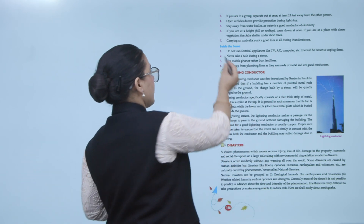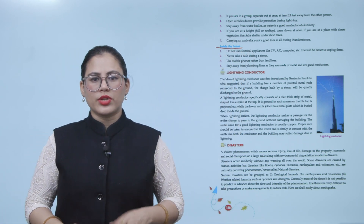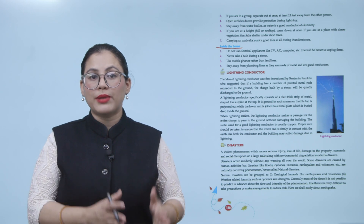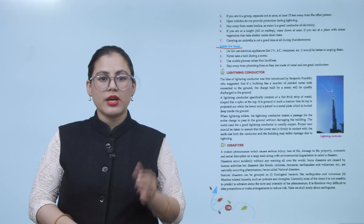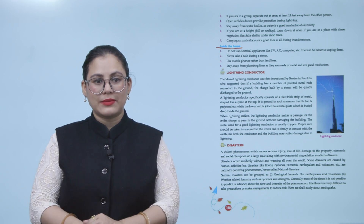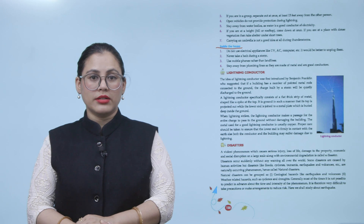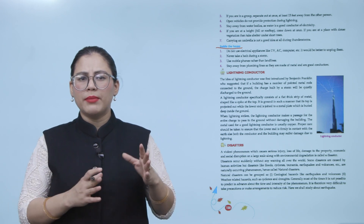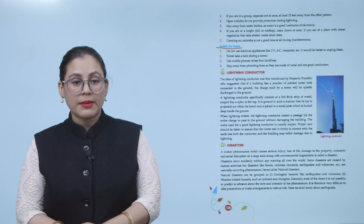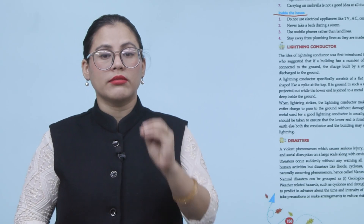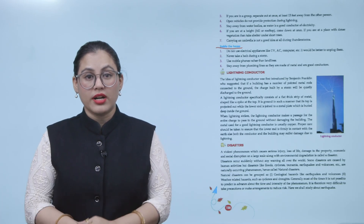Inside the house during a thunderstorm: number one, do not use electrical appliances like TV, AC, computer, etc. — it would be better to unplug them. Number two, never take a bath during a storm. Number three, use mobile phones rather than landlines. Number four, stay away from plumbing lines as they are made of metal and are good conductors. Jab bhi kabhi thunder ho, electric appliances ka bilkul bhi use na karein, bal ki unko unplug karna ek better option hai. Plumbing lines se door rahein kyunki ye metal se bane hote hain aur metal good conductors hote hain.